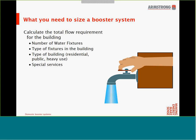Looking at a building, what uses water? The first things that come to mind are toilets, faucets to wash your hands, a shower, maybe drinking fountains. These are part of a group called water fixtures, and they all contribute to the total water flow requirement of the building. To calculate the required flow, there are four things we need to determine. First, we need to get an inventory of the total number of water fixtures in the building.